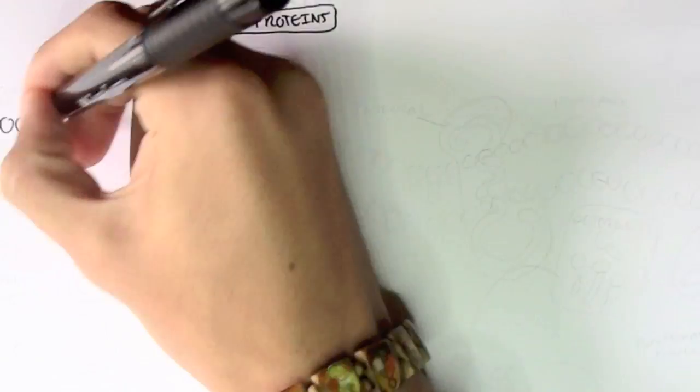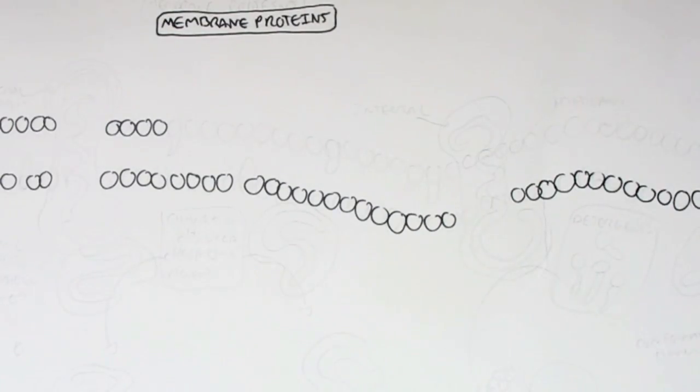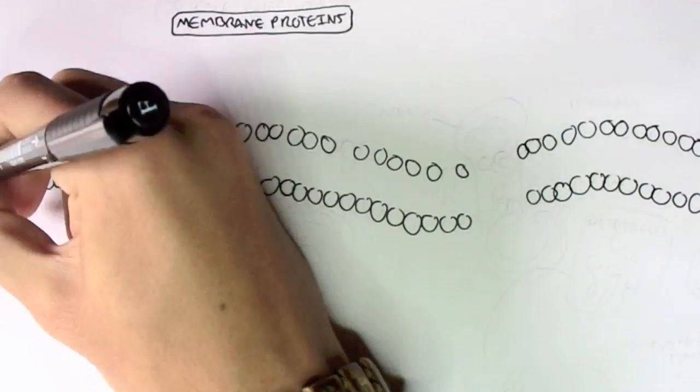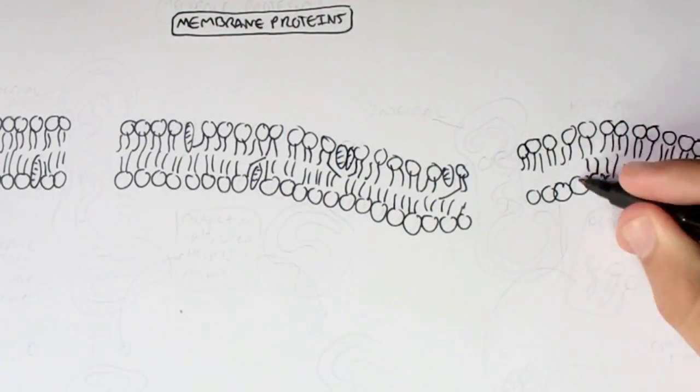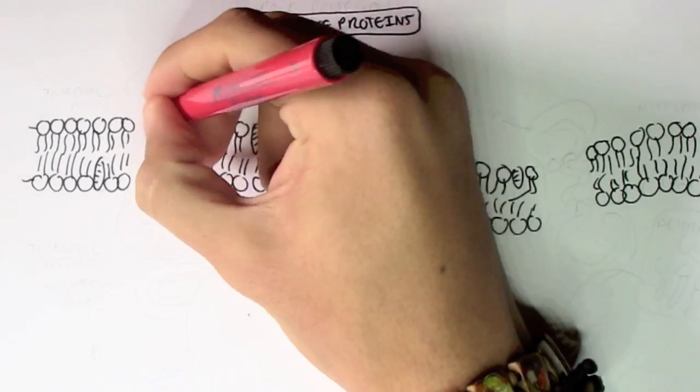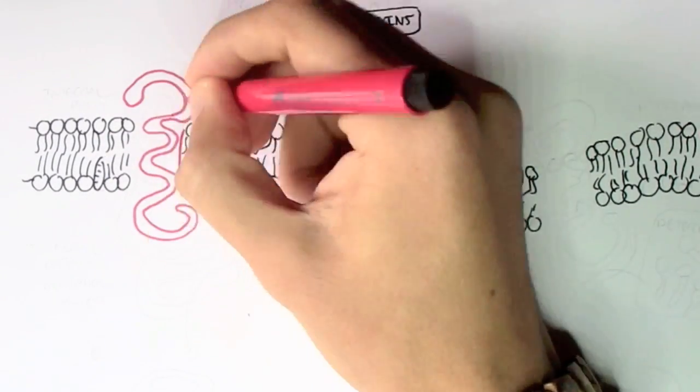We are continuing on from the membrane proteins part 1. This is membrane proteins part 2, and we are looking at the different types, still the different types of proteins and how they are affected by certain chemicals, for example.